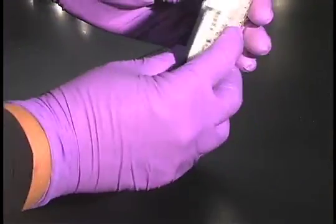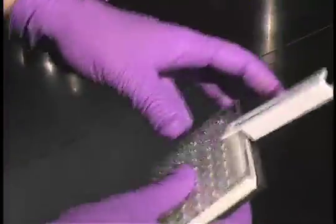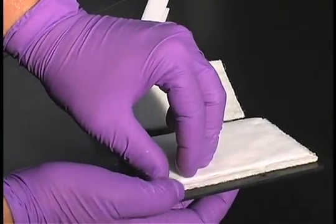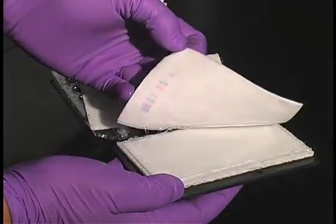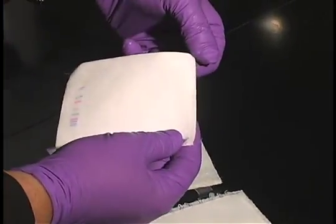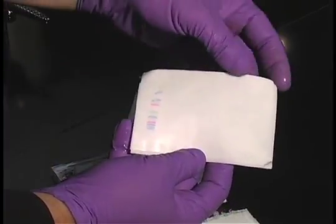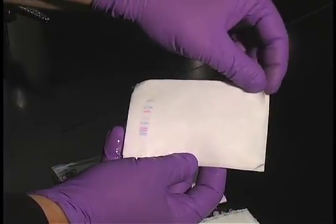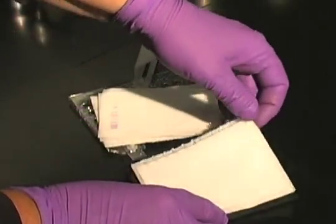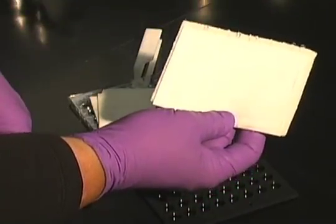When your electroblotting is completed, take your cartridge out. The fiber, the filter paper. This is the PVDF membrane here. And we can see we have transfer of the pre-stained molecular weight marker. The transfer is complete when the gel itself has no trace of the molecular weight marker.